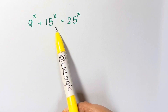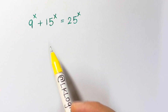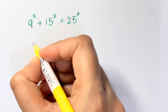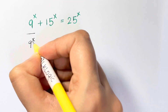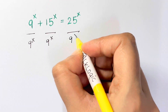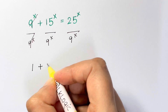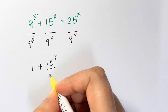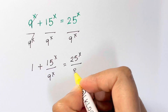9 raised to x plus 15 raised to x equals 25 raised to x. To solve for x, divide both sides by 9 raised to x. This cancels the 9^x term on the left, leaving us with 1 plus 15 to the x over 9 to the x equals 25 to the x over 9 to the x.